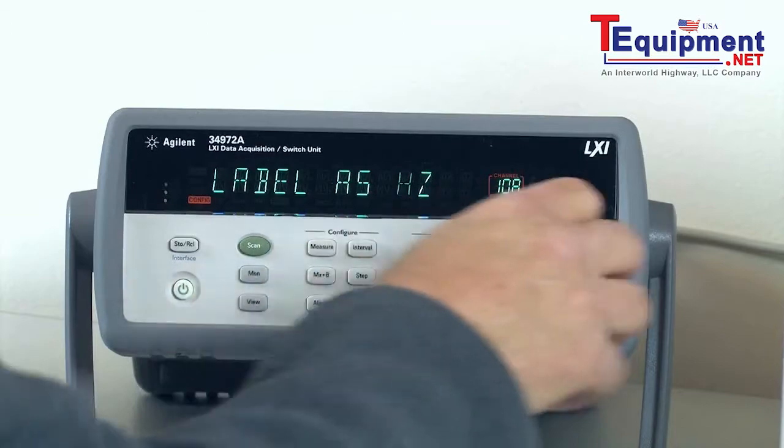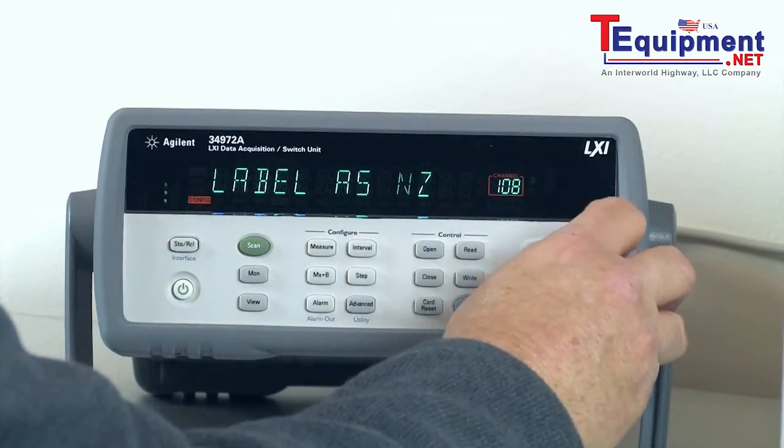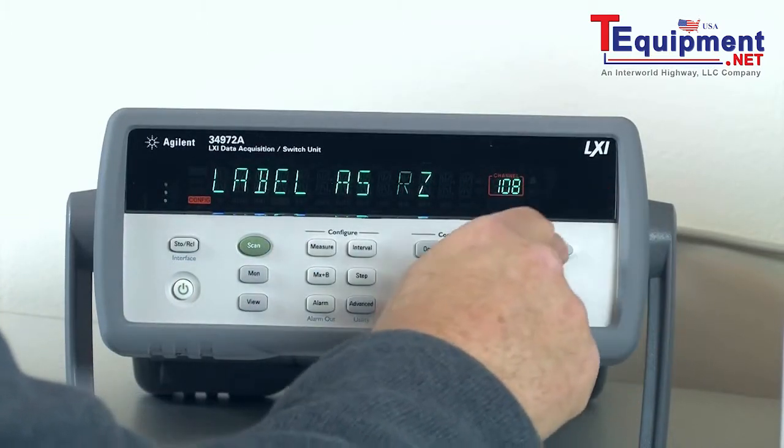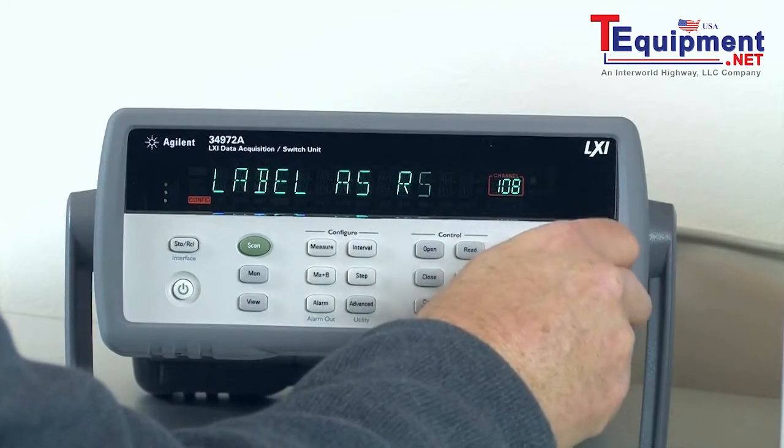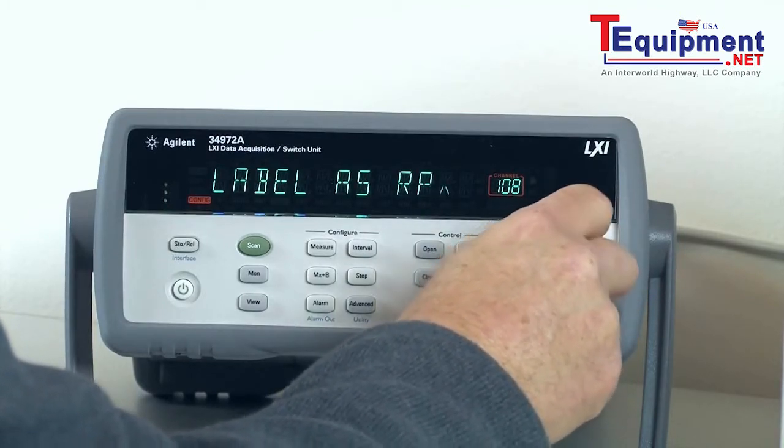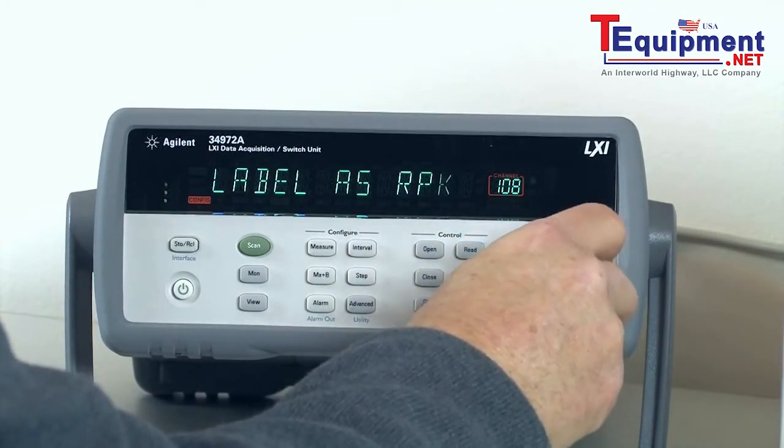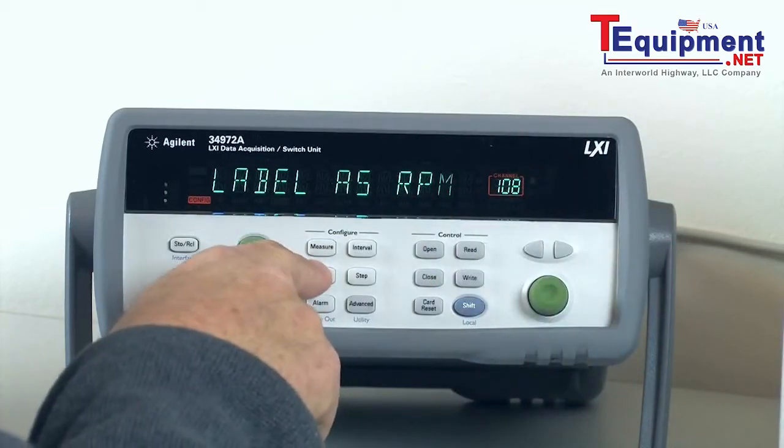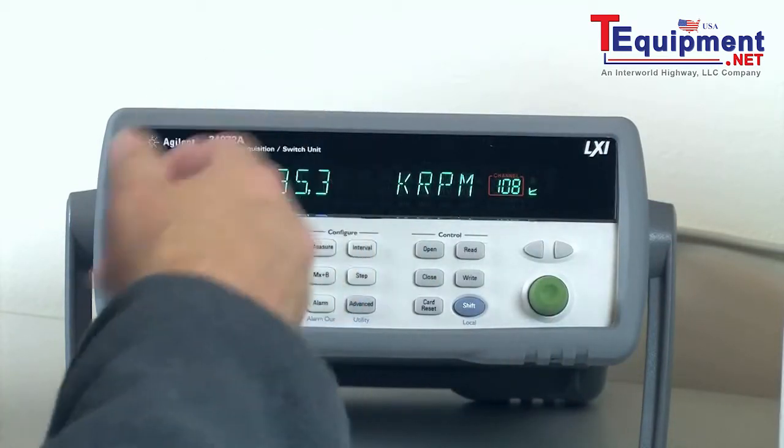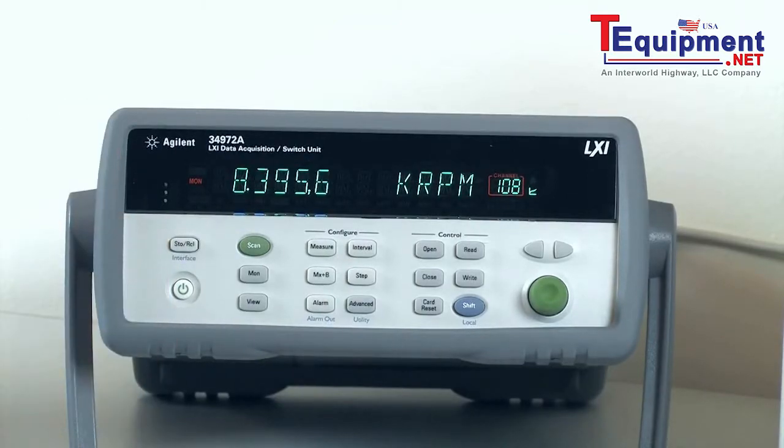Then there's no offset that I want to enter. I can put in a label. So I'm going to go ahead and do that. I'm going to actually change this to say R-P-M. So RPM. Done. So now it's measuring and it says it's 8400 RPM.